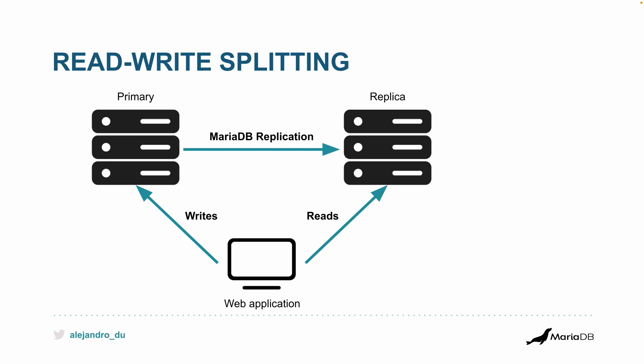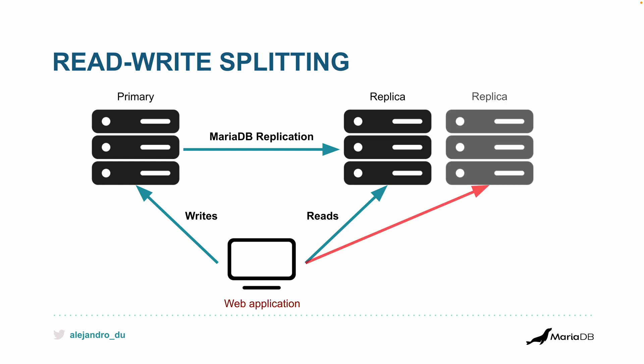The primary doesn't need to run queries — just updates and inserts. You can scale horizontally by adding more replicas, and then do load balancing between those replicas so you can handle more and more reads. You can also do the opposite — remove a replica when you don't need it.